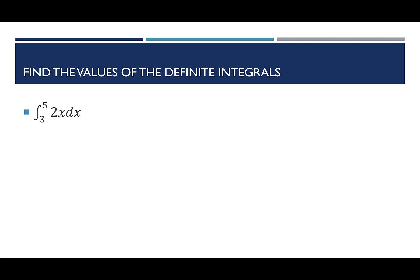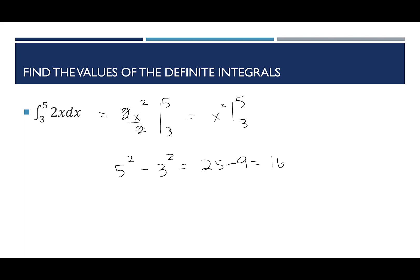The first one is the integral from 3 to 5 of 2x dx. I start by integrating: I have 2x squared over 2. I plug in 5 and then plug in 3. The 2 cancels, so I just have x squared from 5 to 3. Starting with the larger number: 5 squared minus 3 squared. 5 squared is 25, 3 squared is 9, and 25 minus 9 is 16.